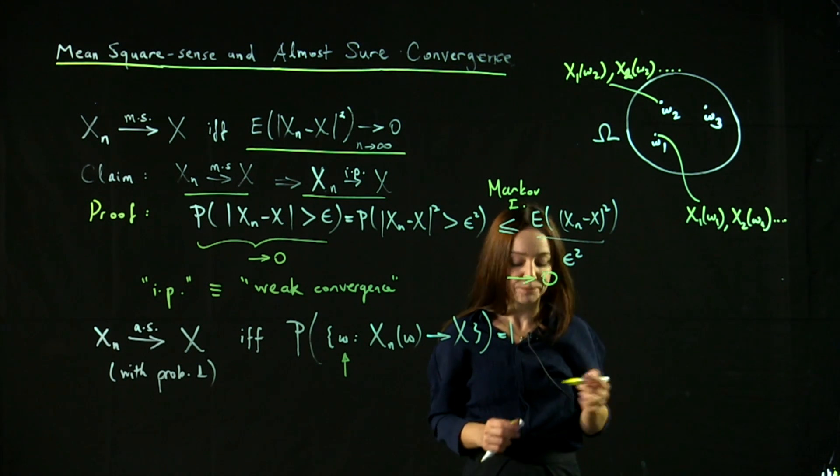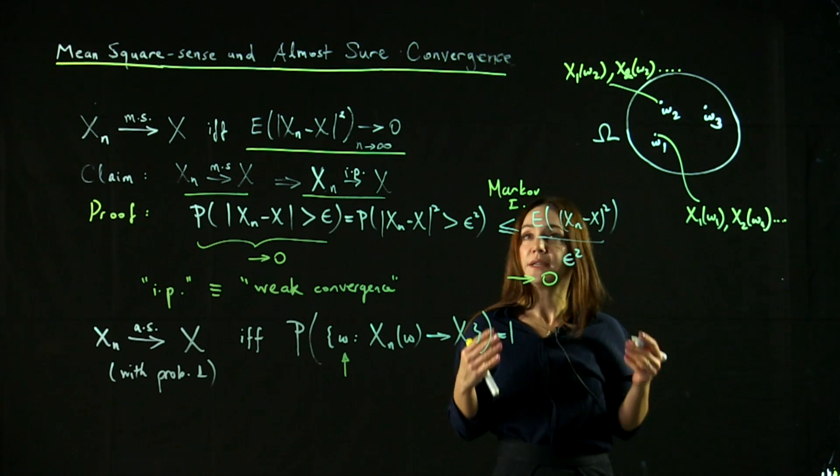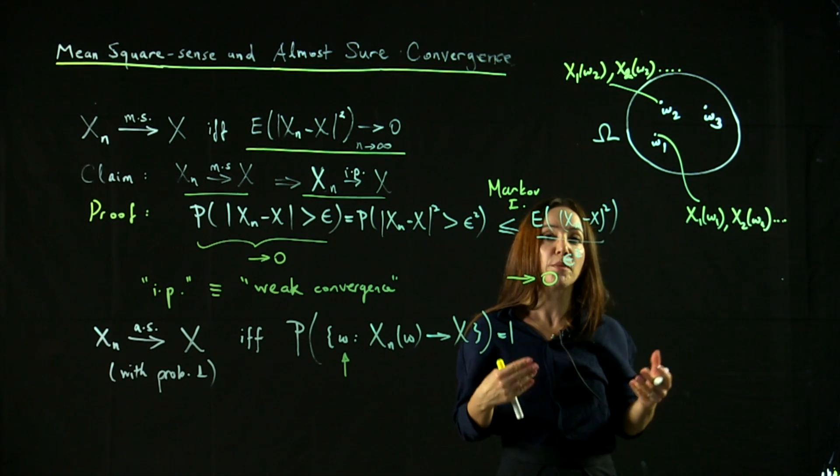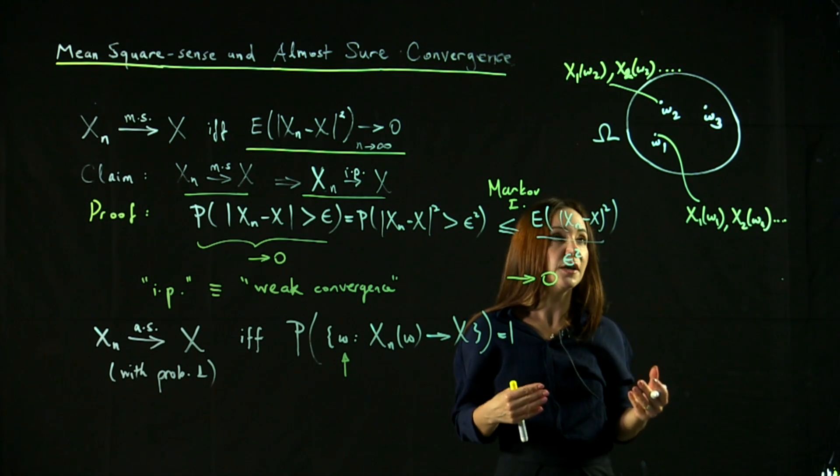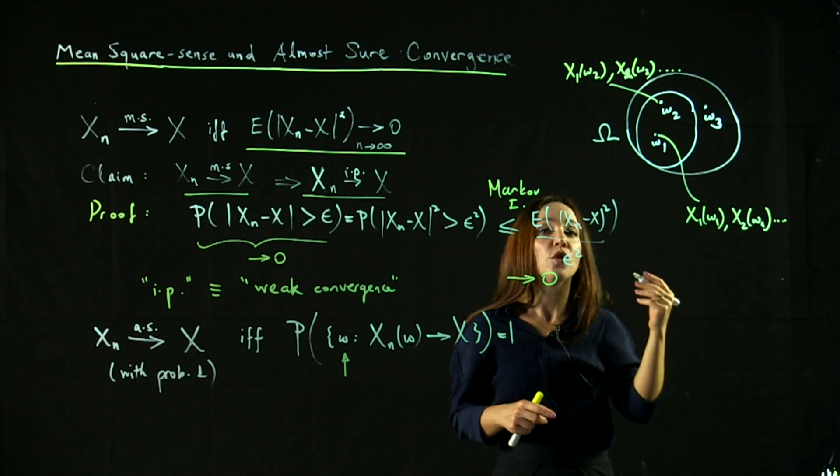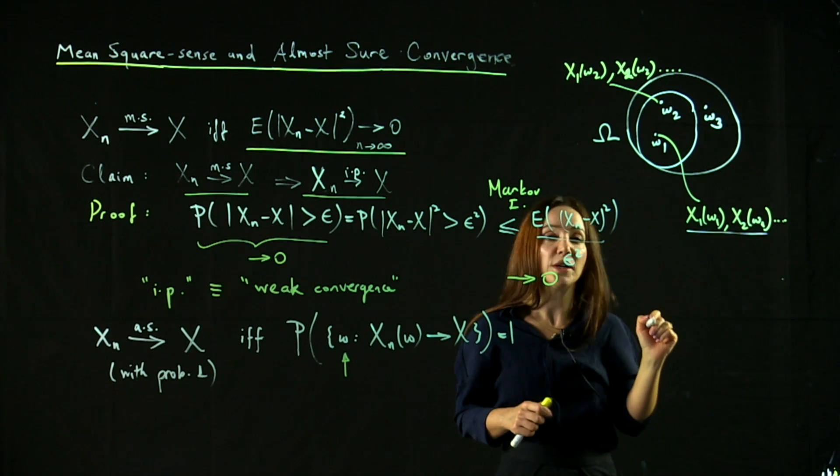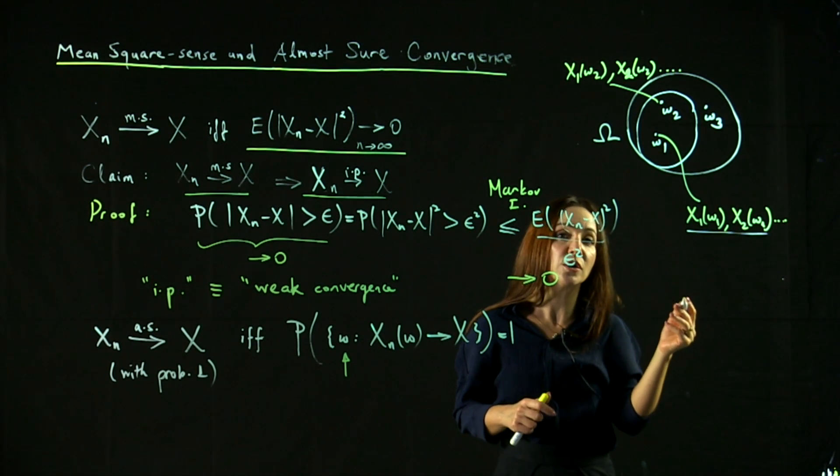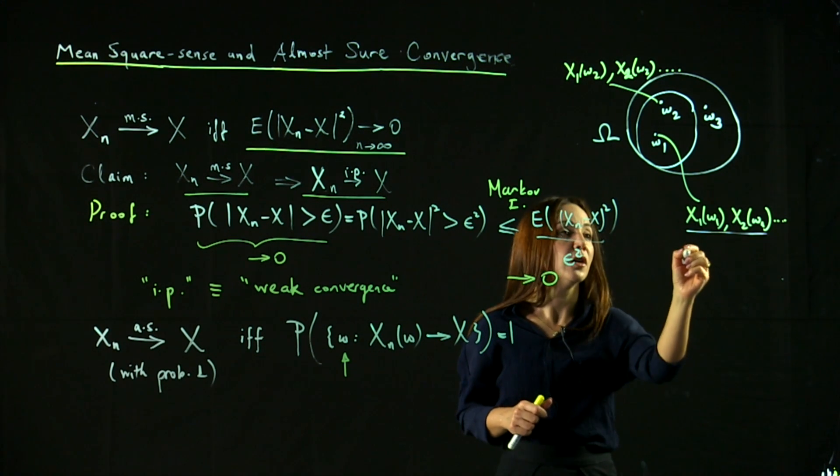So each realization is a sequence, a deterministic sequence. Now, the random variable is said to converge with probability one to the distribution x if the total probability of the outcomes where the corresponding sequence converges to x is one.